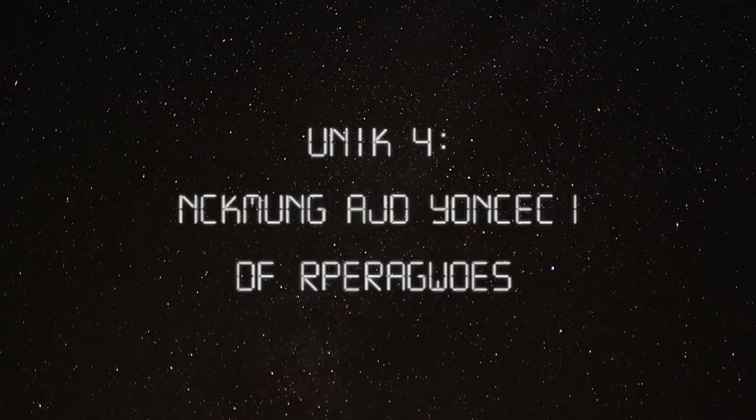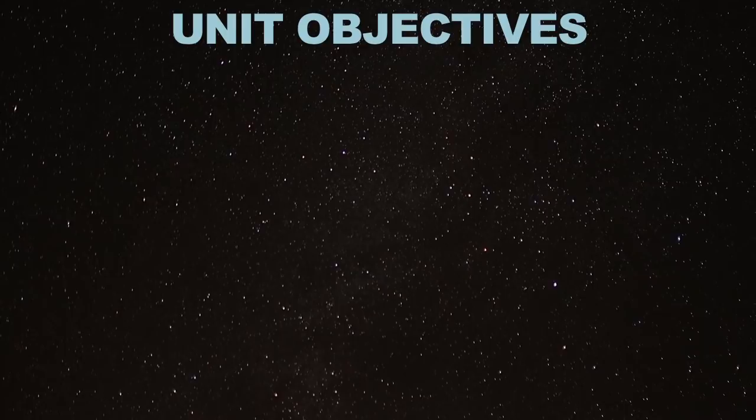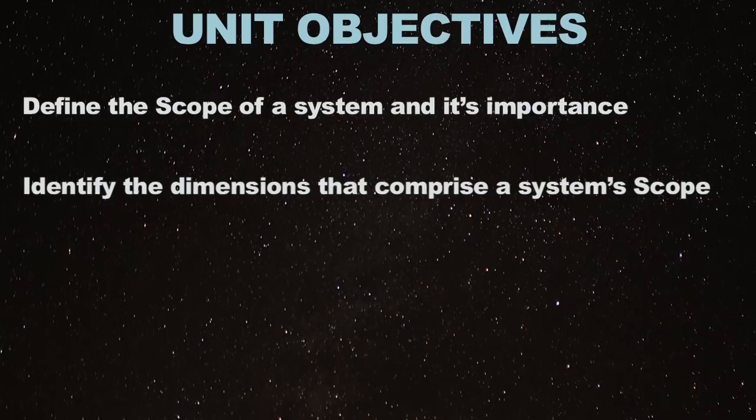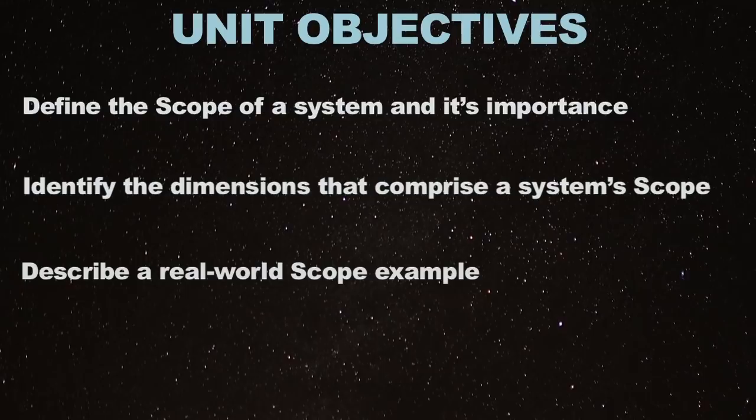Welcome to the fourth unit of NASA and the Sailor Foundation Space System Engineering course: Scoping and Concept of Operations. The unit objectives include defining the scope of a system and its importance, identifying the dimensions that comprise the system's scope, describing a real-world scoping example, and explaining the importance of having a concept of operations.